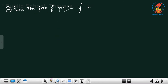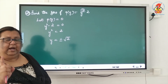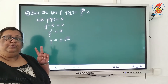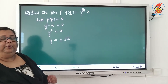Second question: find the zero of the polynomial p(y) = y² − 2. Let p(y) equal zero, so y² − 2 = 0, which means y² = 2, so y = ±√2. Since it is a quadratic polynomial — highest degree two — we will have two solutions: +√2 and −√2.